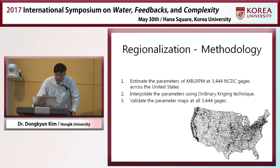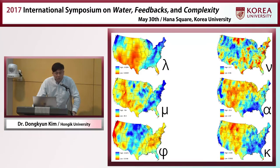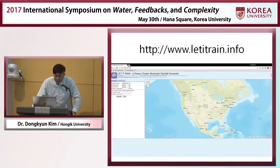After developing this optimization algorithm, I identified six parameters for all 3,444 gauges across the United States. For each of these points we have six parameter values, so I made a map of these six parameters. The strength of this map is that we can obtain parameter values at any given location, meaning we can generate rainfall at any given location in this map — we don't have to have observed rainfall data. I implemented this as a web application.